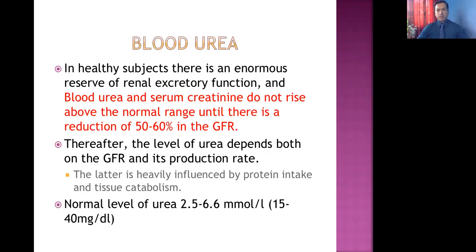Blood urea and serum creatinine are important parts of the renal function test. In healthy subjects, there is an enormous reserve of renal function — blood urea and serum creatinine do not rise above the normal range until there is a reduction of 50 to 60 percent in the GFR. If our kidneys are not damaged more than 50 to 60 percent, there will be no rise in blood urea and serum creatinine.